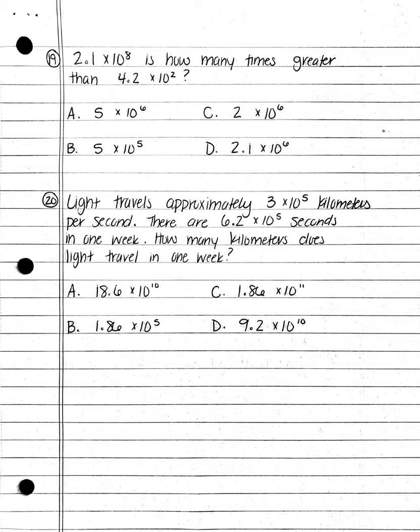Number 20. Light travels approximately 3 times 10 to the fifth kilometers per second. There are 6.2 times 10 to the fifth seconds in one week. How many kilometers does light travel in one week? A. 18.6 times 10 to the tenth power; B. 1.86 times 10 to the fifth power; C. 1.86 times 10 to the eleventh power; or D. 9.2 times 10 to the tenth power.